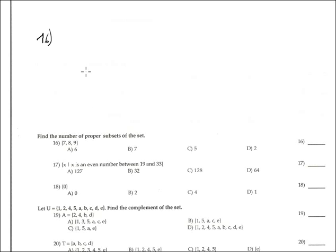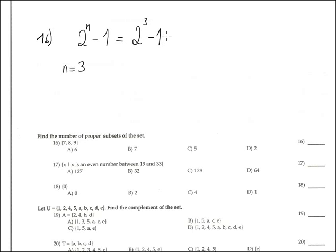Problem 16 is about proper subsets. A proper subset is every subset except the set itself. The formula is 2 to the n minus 1. In this case, n is equal to 3 because the elements are 7, 8, and 9. So the formula gives 2 to the third power minus 1, which is 8 minus 1, equals 7.